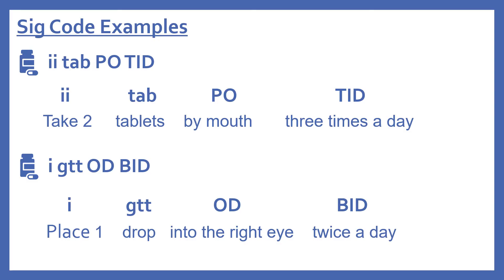The next example is 'I GTT OD BID.' I is one, so it's place one. GTT is drop. OD is the right eye. BID is twice a day. So the full meaning is: place one drop into the right eye twice a day.